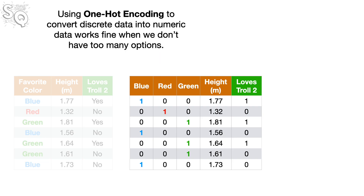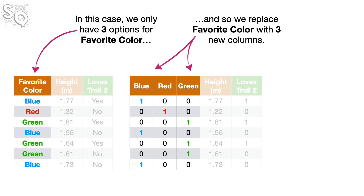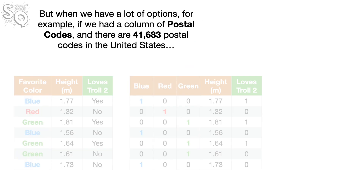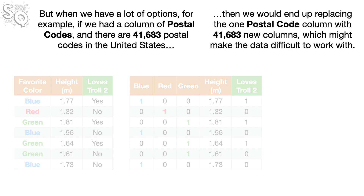Using one-hot encoding to convert discrete data into numeric data works fine when we don't have too many options. In this case, we only have three options for Favorite Color, so we replace Favorite Color with three new columns. But when we have a lot of options — for example, if we had a column of postal codes, and there are 41,683 postal codes in the United States — then we would end up replacing the one postal code column with 41,683 new columns, which might make the data difficult to work with.